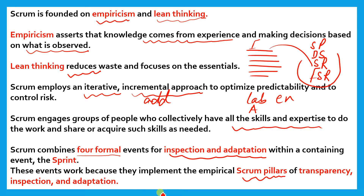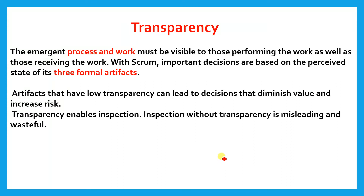Because of these events and what they implement — and this question might come — there are three Scrum pillars. The first one is transparency, the second is inspection, and the third is adaptation. Now we will discuss each of these pillars one by one.